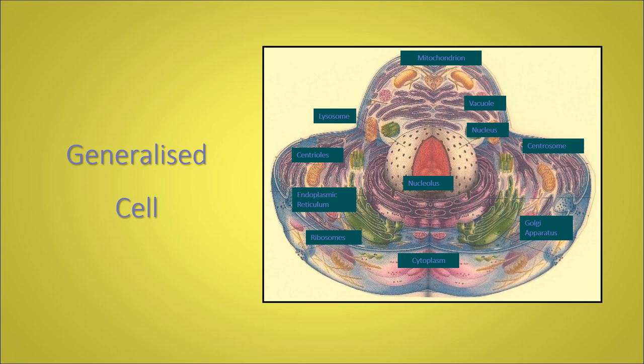We have the mitochondria, sausage-shaped cells at the top of the cell. Endoplasmic reticulum, ribosomes, lysosomes, vacuole.